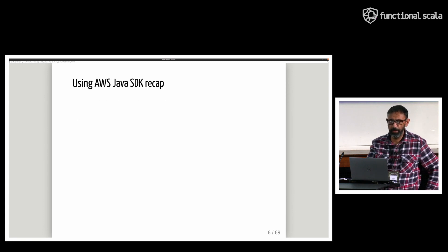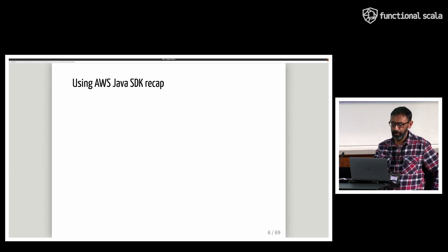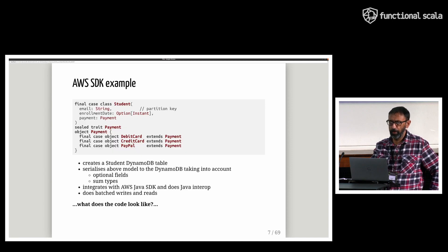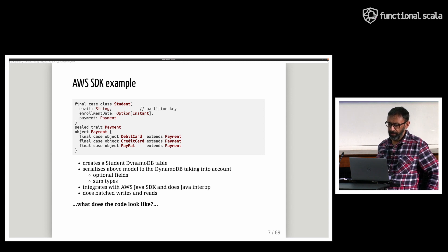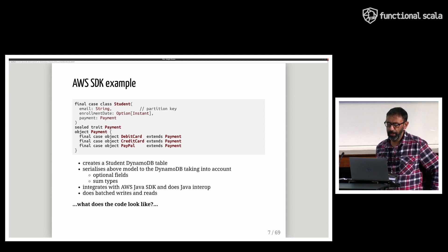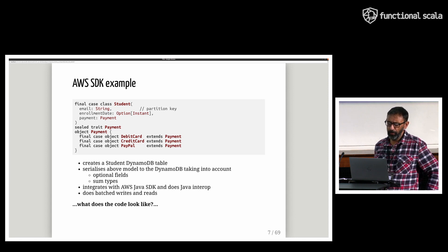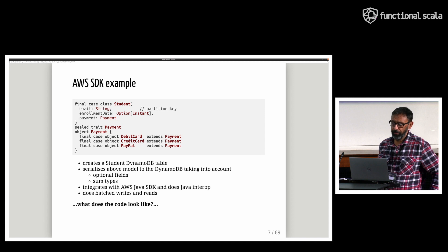Using the AWS Java SDK, we're going to take a simple Scala model consisting of a student case class and a payment sum type. Then we're going to create the table, save the model to this table, read it back again using batched reads and writes, taking into account optional fields and sum types. Along the way, we're going to have to integrate with the SDK and do Java interop.